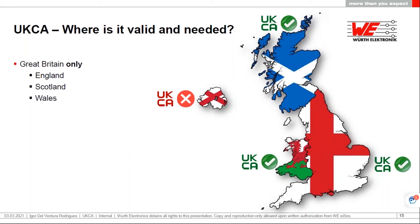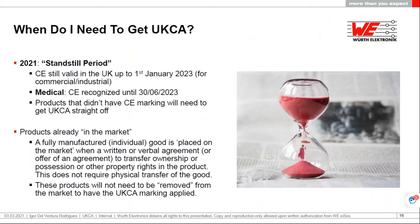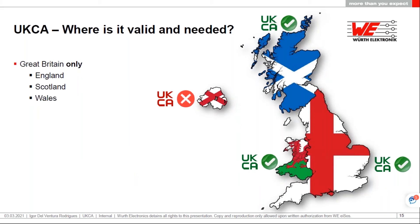The UKCA mark stands for United Kingdom, but it is only applicable to Great Britain. As part of the Brexit negotiations, there was an impasse regarding the land border between Northern Ireland and the Republic of Ireland. A sea border was agreed between Northern Ireland and Great Britain. So although it's called the UKCA mark, it effectively applies to Scotland, England and Wales only. When it comes to Northern Ireland, they have the UKNI mark.